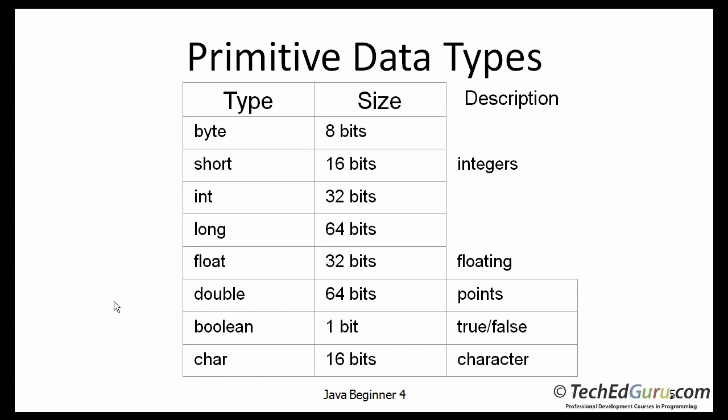If you are working with a whole number, you have four different types. You can either pick byte, short, int, or long, depending on the length of the information that you want to store in there. For floating point types, you have float and double.